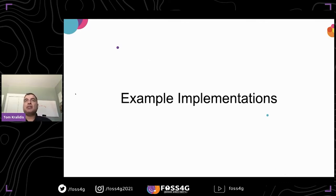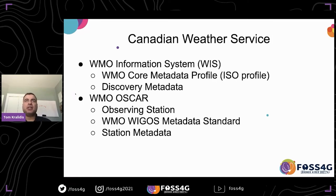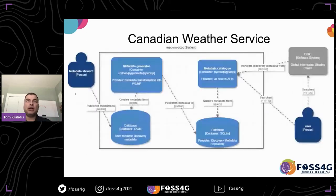Example implementations: at the Meteorological Service of Canada we've used pygeometa for the WMO Information System. WIS requires an ISO profile of metadata, so we use pygeometa to create our discovery metadata records, put them into our catalog, and make them available to the WIS infrastructure. We also use it for WMO observing station metadata — WMO has a system called OSCAR that requires monitoring activities to submit their station metadata, so we use pygeometa in real time to set up our WIGOS metadata and send it to the WMO OSCAR system.